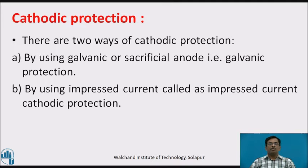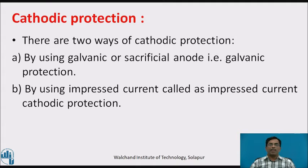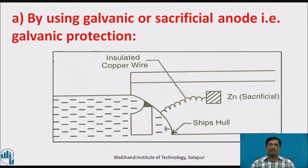There are two ways of cathodic protection. The first is by using a galvanic or sacrificial anode, that is galvanic protection, and the second one is by using impressed current, called impressed current cathodic protection.